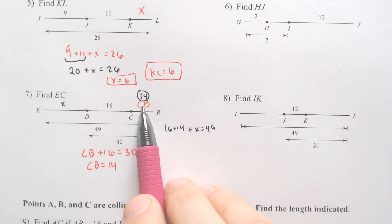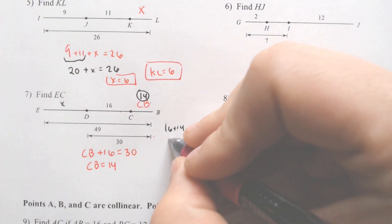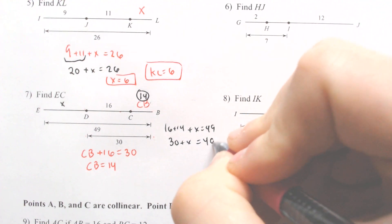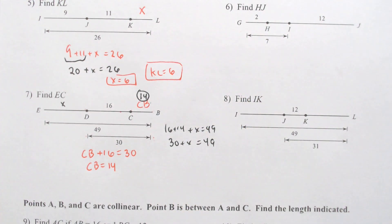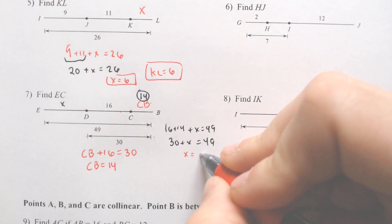You could also recognize, well, 16 plus 14 is 30. How much more do I have to add to 30 to get to 49, which is what the equation tells you as well. We got 30 plus X equals 49. If you subtract the 30 from the 49, you get 19.